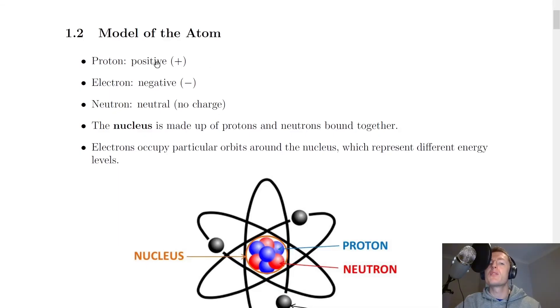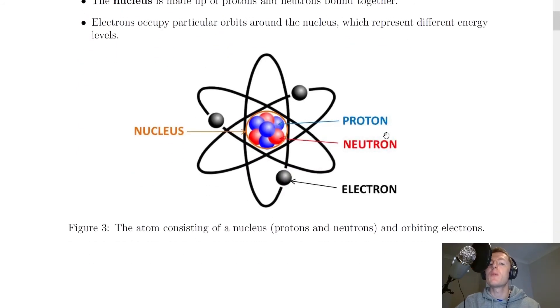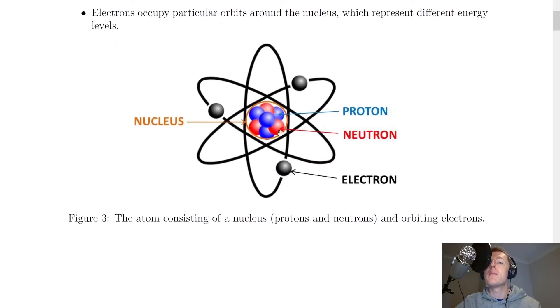So remember first of all that protons are positively charged, electrons are negatively charged, and neutrons are neutral. The nucleus is made up of protons and neutrons bound together. So if we look at our picture of the atom here, remember we have the nucleus in the middle, which is composed of the neutrons and protons bound together.